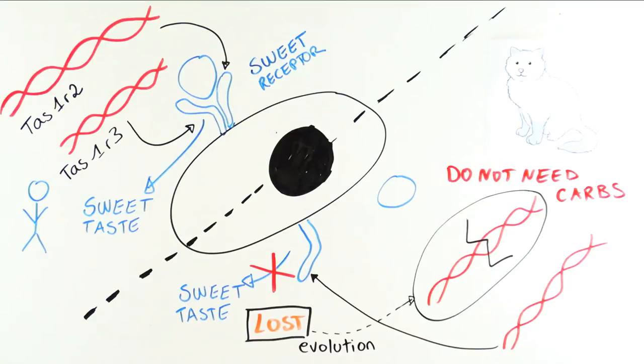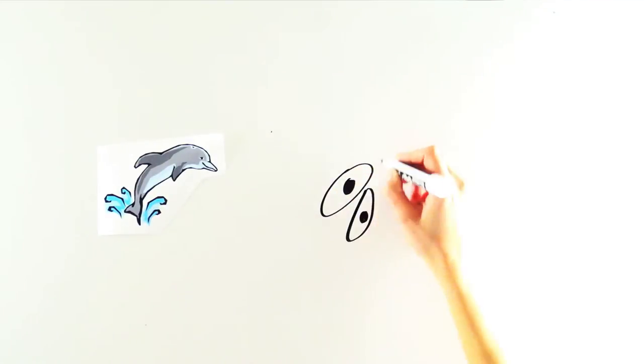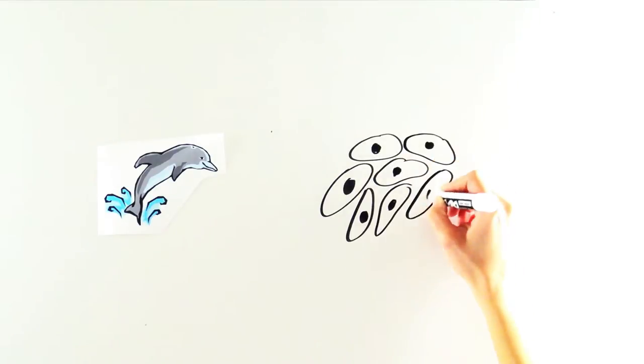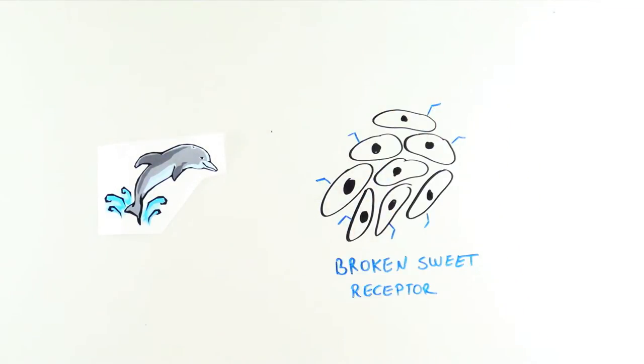But cats are not the only meat eaters on earth. There are many other highly carnivorous mammals, so what is the status of their sweet receptor? It turns out that some species of marine mammals, including dolphins, have also lost the functionality of their sweet receptor. Not only that, dolphins cannot taste bitter foods either.